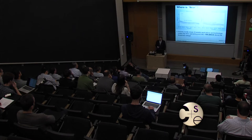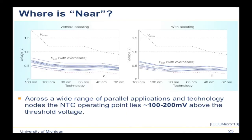To quantify exactly where 'near threshold' is for many applications, we plotted results with and without boosting across technology nodes. The top dotted line is nominal voltage; the bottom pinkish-red dotted line is threshold voltage; each blue line is a parallel benchmark or proxy application. The optimal energy efficiency point tracks closely with the threshold voltage shape, running about 100–200 millivolts above threshold voltage. It's mainly a function of how parallel the workload is and the communication-to-computation ratio.